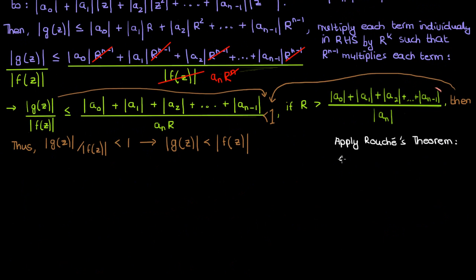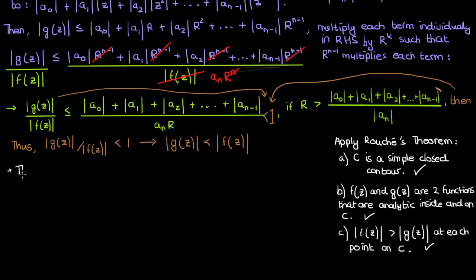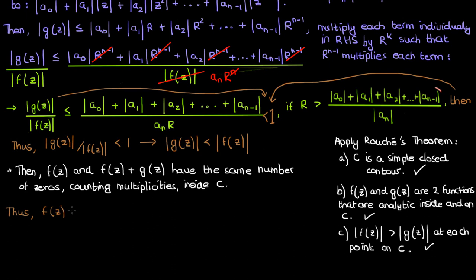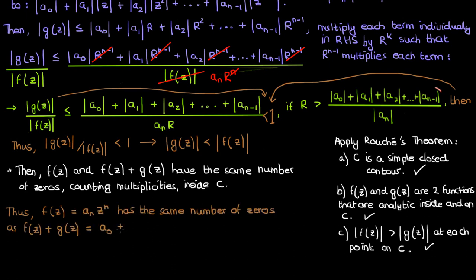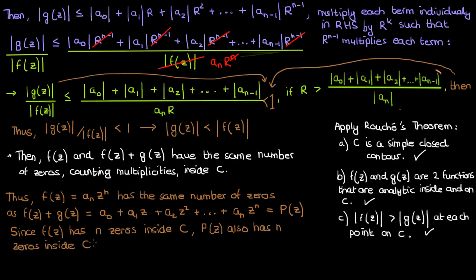At this point we're ready to apply Rouché's theorem. The first condition is satisfied: C is a large circle, so it's a simple closed contour. The second condition is satisfied: f and g are polynomials, so they are analytic inside and on C with no poles. The third condition is what we just proved: |f(z)| > |g(z)| on C. Therefore f(z) and f(z) + g(z) = p(z) have the same number of zeros inside C. Since f(z) = a_n · z^n has n zeros counting multiplicity, the polynomial p(z) also has n zeros inside C counting multiplicity, proving the fundamental theorem of algebra.